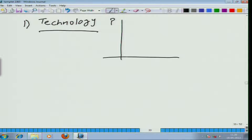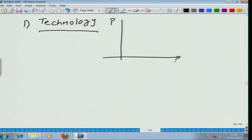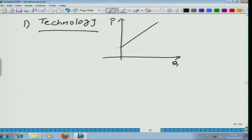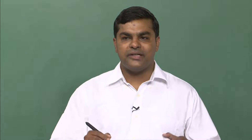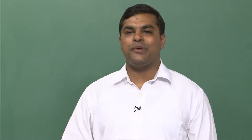I remind you that whenever in economics we are drawing the graph, quantity is always on the x-axis and price on the y-axis, even though quantity is the dependent variable and price is the independent variable. Roughly, this is the supply curve. It need not be a straight line — it can be any upward sloping curve — but just for illustration I am drawing a straight line. Now let us see what happens if there is an improvement in technology.